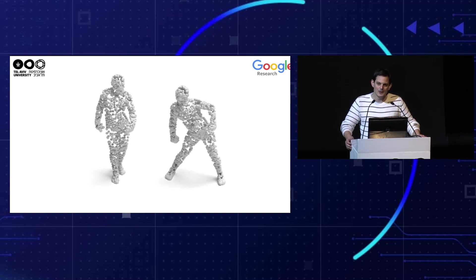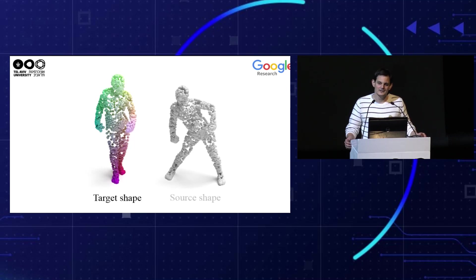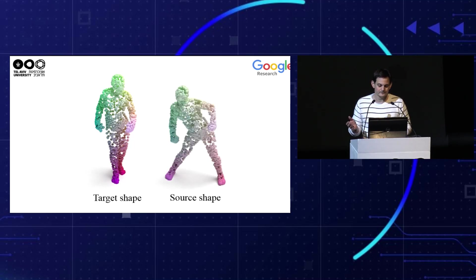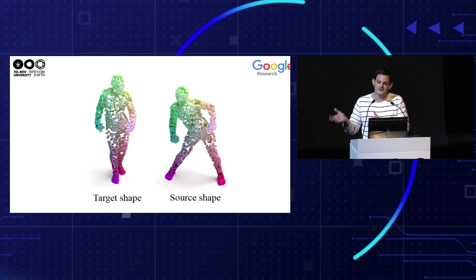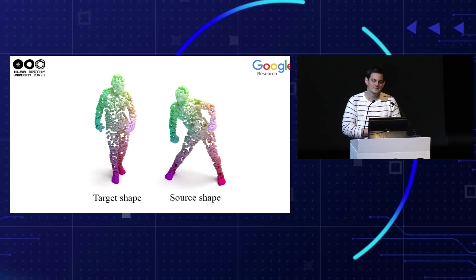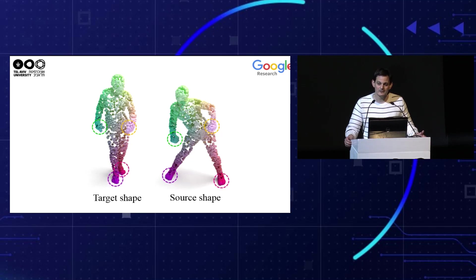Let's start talking about shape correspondence, where we are given two non-rigged shapes in the form of point clouds — one is the target and the other is the source — and our goal is to map each point from the source to each matching point at the target. The colors are transferred from the left shape to the right shape according to our resulting matching. This is non-trivial because there are many possible mappings, the density of points varies across the point cloud, and the shapes usually contain symmetrical parts such as the hands and the legs. Our method can accurately align the point clouds and differentiate between the symmetrical parts.